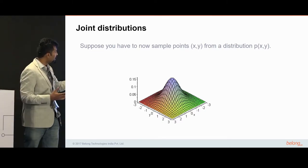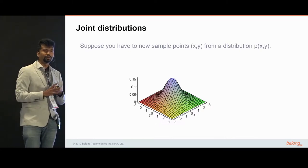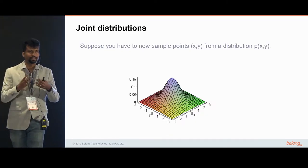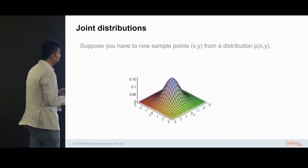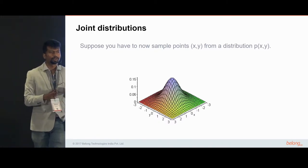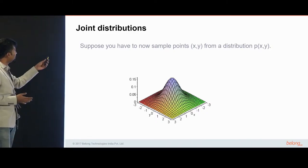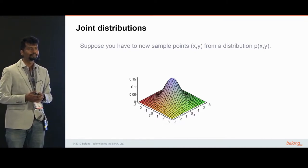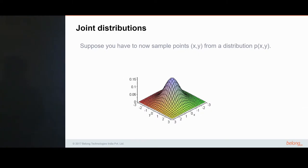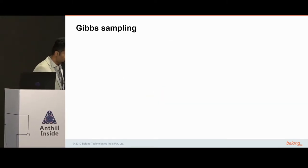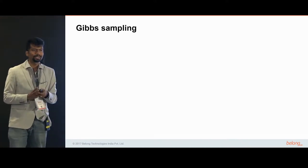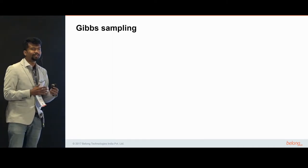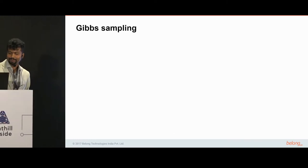As you can see, more points lie somewhere around the center at (0, 0), and fewer points are distributed at the periphery. How do we sample points x, y from this distribution? I'm going to introduce a very powerful algorithm called Gibbs sampling. Once you know Gibbs sampling, you will realize that you can apply it in almost every context.